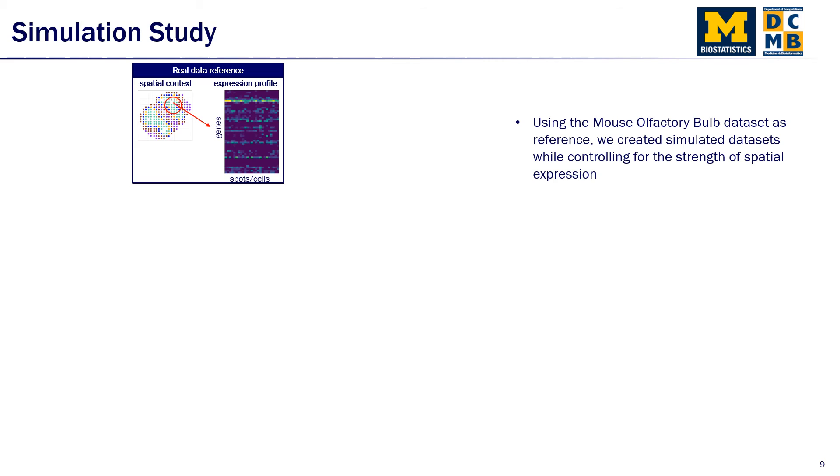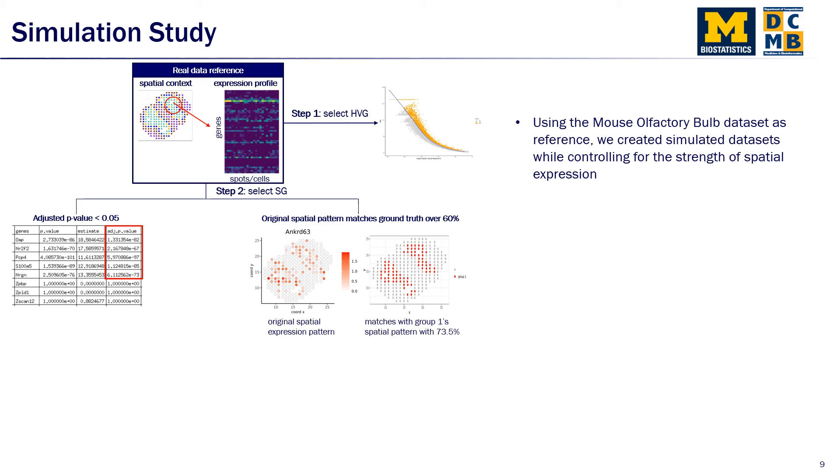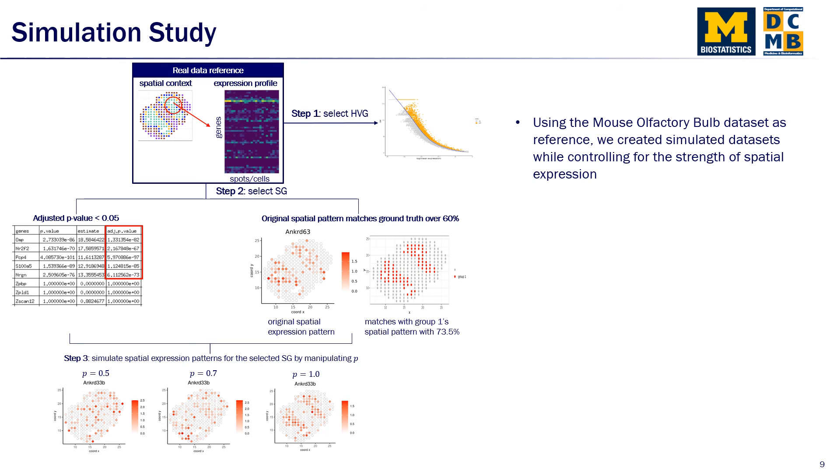We also did a simulation study where we use the mouse olfactory bulb data set as reference, and we created simulated data sets while controlling for the strength of spatial expression. Using the real data set reference, we extracted highly variable genes, and then we selected spatially variable genes. These genes needed to have adjusted p-value of lower than 0.05, and their original spatial expression pattern also needed to match a certain ground truth group by more than 60%. And then we simulated new spatial expression patterns for these selected genes by manipulating the spatial probability value p.